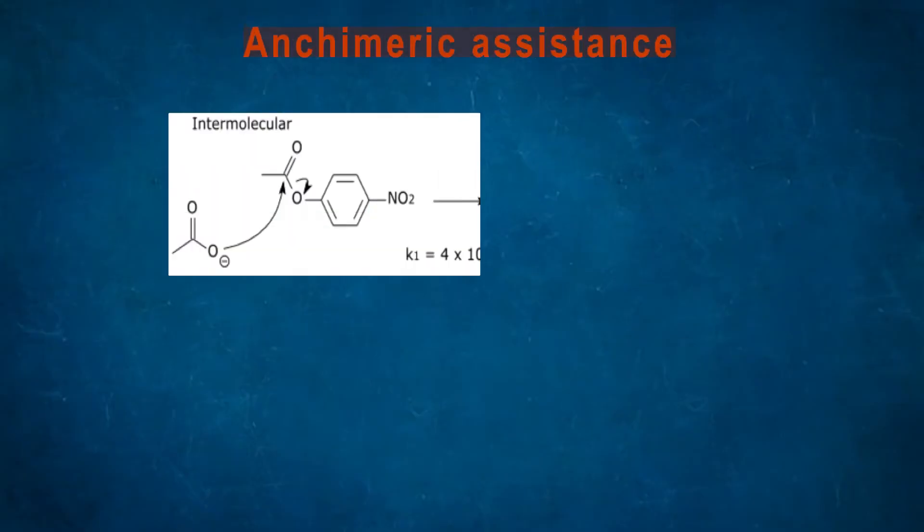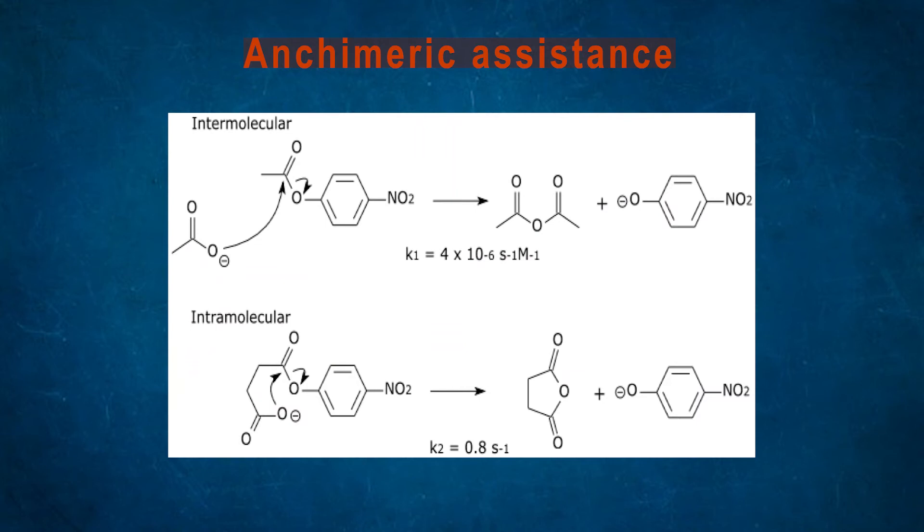Proximity and orientation effect with respect to anchimeric or stereoelectronic assistance: Intramolecular reaction arrests molecular motion. Intramolecular reaction is much more favored than intermolecular reaction. K1 is 4 × 10^-6 M^-1 s^-1 for intermolecular reaction.